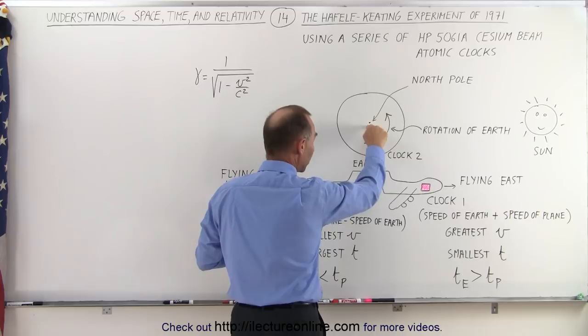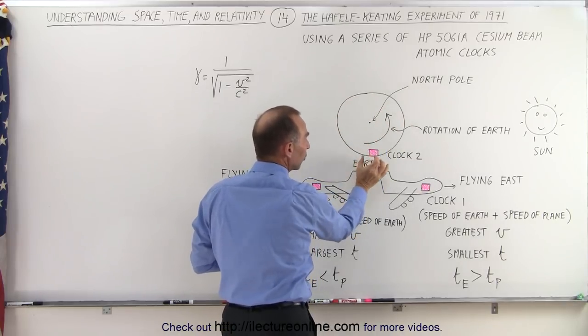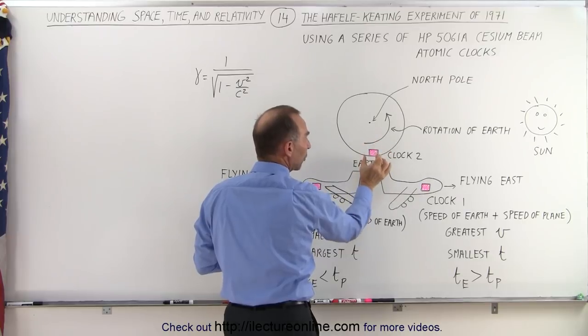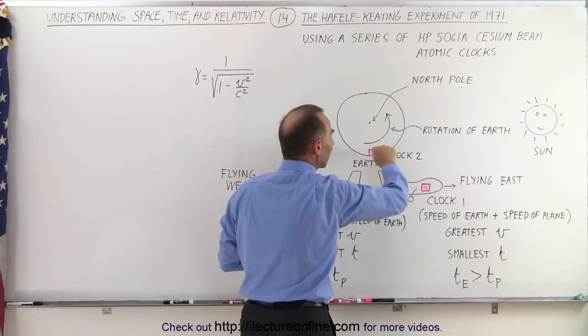Looking from the North Pole, we can see the Earth rotates in a counterclockwise direction, so depending upon where they put the clock relative to the equator, they can calculate the speed of the clock as it goes around the Earth.